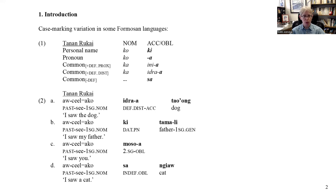Examples are shown in example 2: a definite MP in A, a human MP in B taking the dative ki marker, a personal pronoun in C with the -a suffix, and an indefinite noun in D with the Sa preposition.